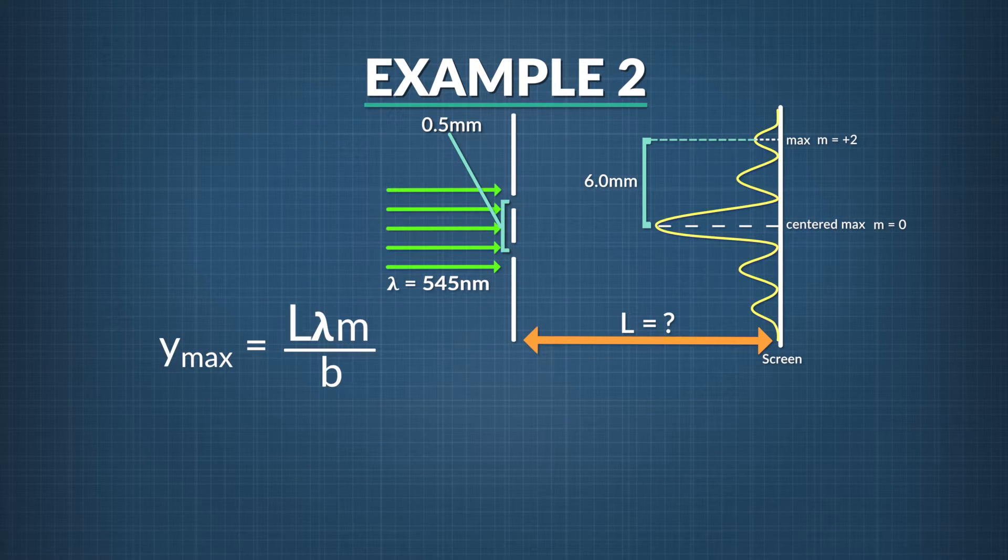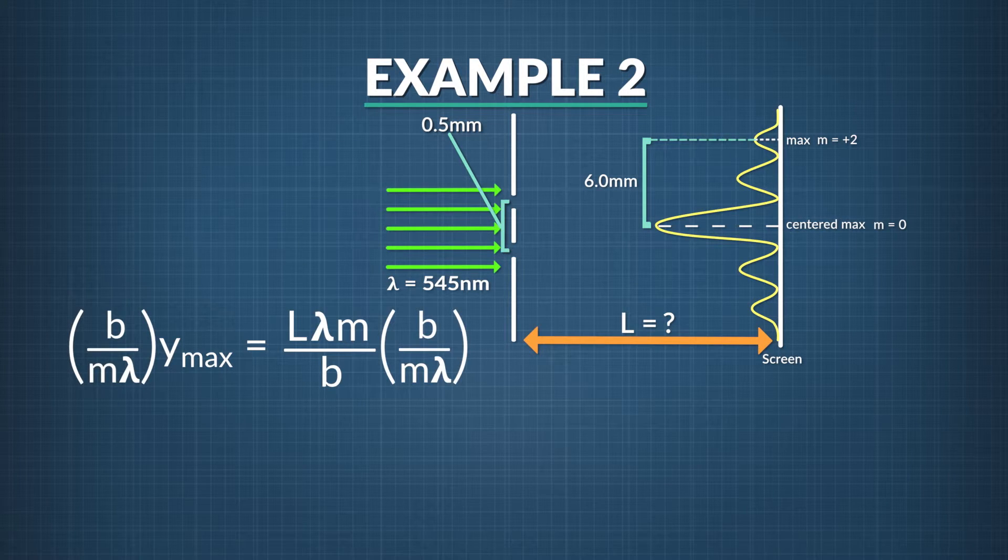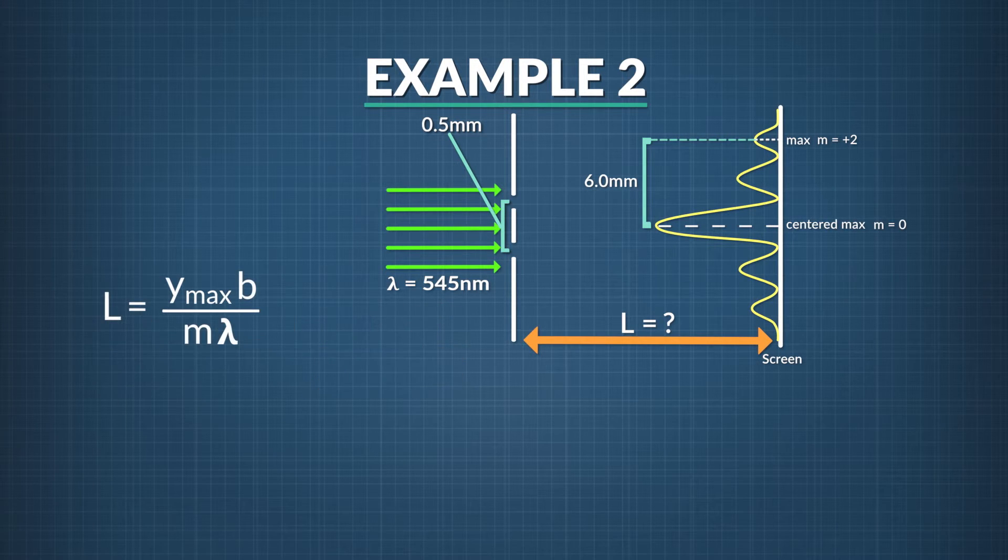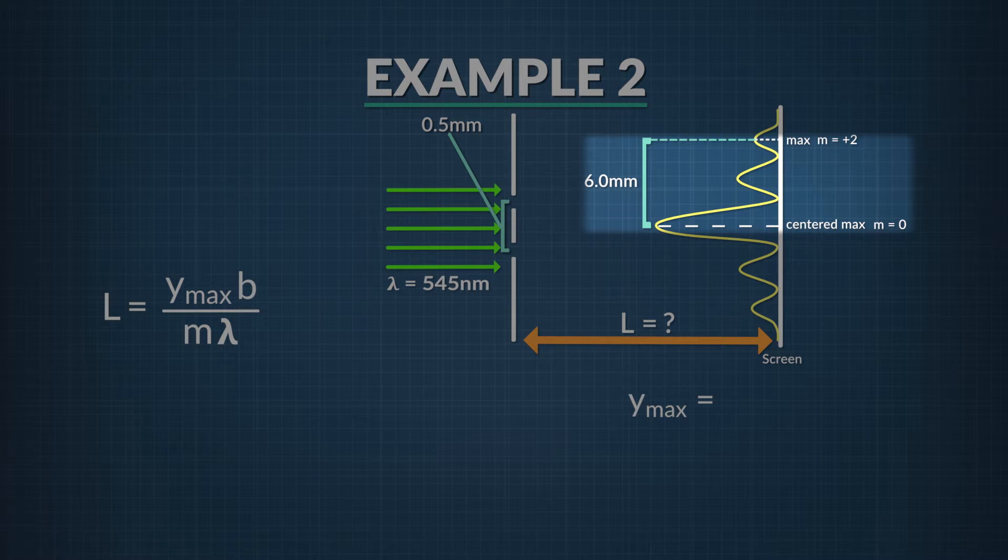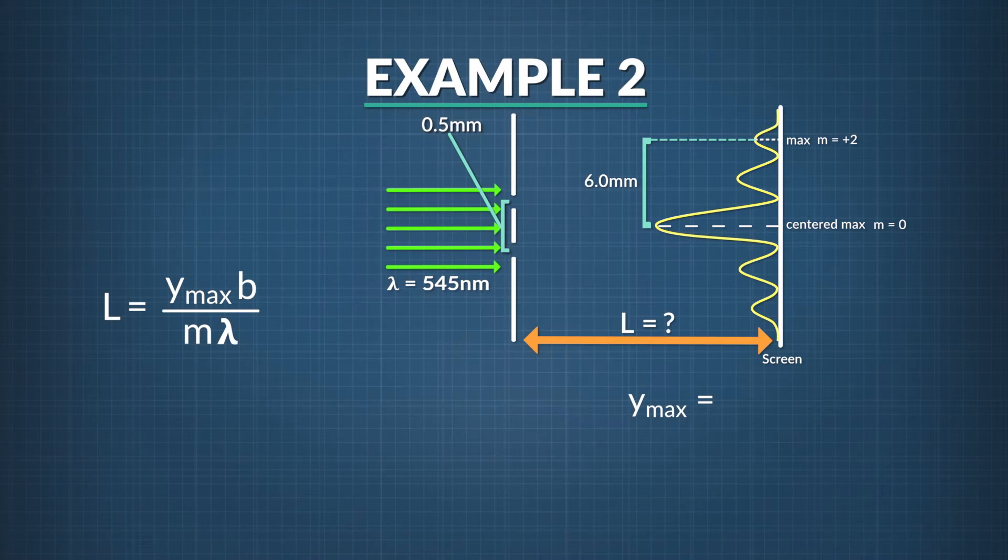We want to solve for the distance L. So let's rearrange the equation so it says L equals something. Multiplying both sides of the equation by b and dividing both sides by m times lambda, we see the equation now reads L equals y_max times b divided by m times lambda. Now if we can find out and fill in the other parts of the equation, we'll be able to solve for L. Y_max is the distance we measured, the position of the second bright spot above the center of the pattern, 6.0 millimeters, or 0.006 meters.